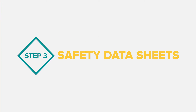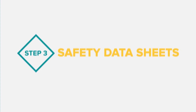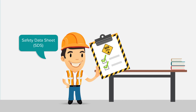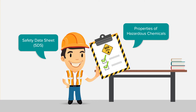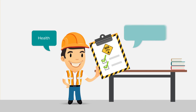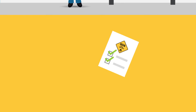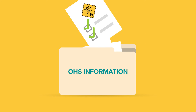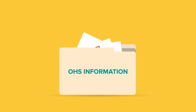Step 3: Obtain and review Safety Data Sheets. An SDS, previously called a Material Safety Data Sheet or MSDS, provides information on the properties of hazardous chemicals and how they affect health and safety in the workplace. It is an important source of information to reference when making decisions on managing associated risks.